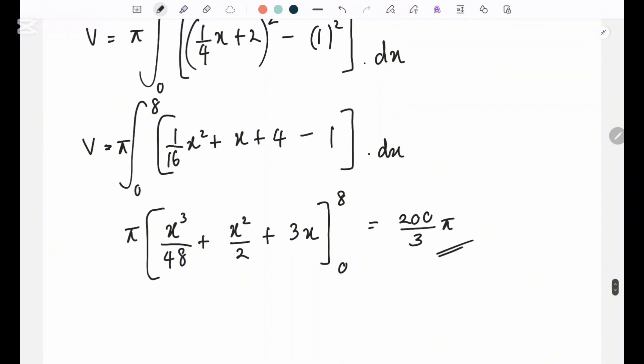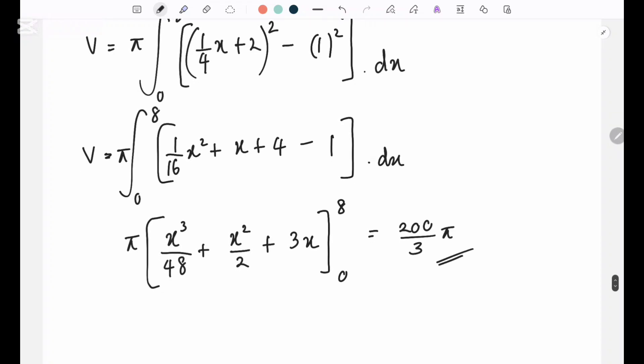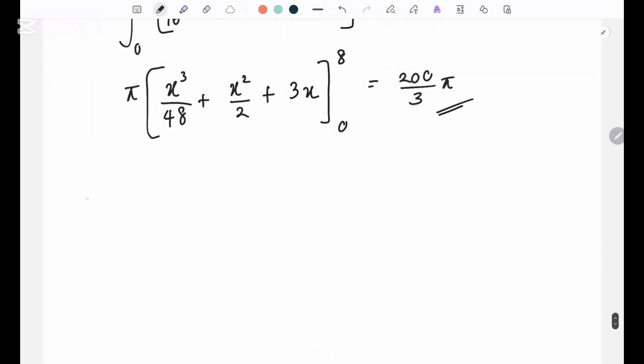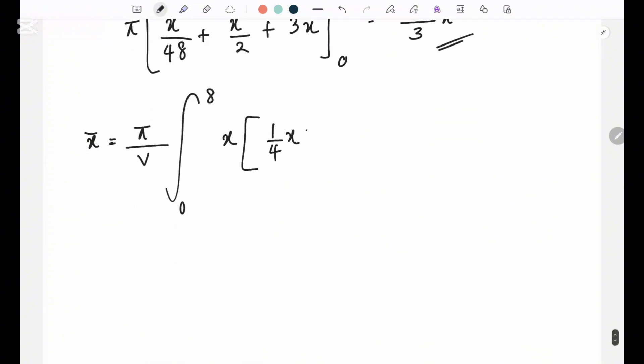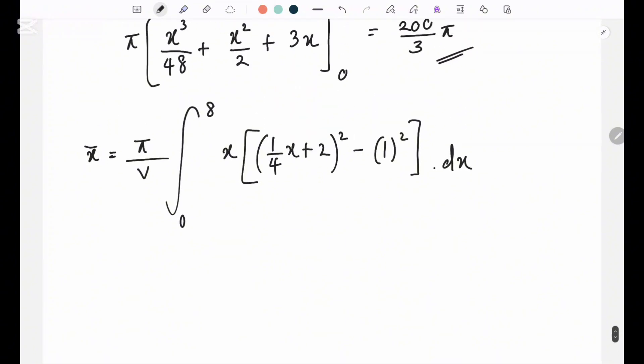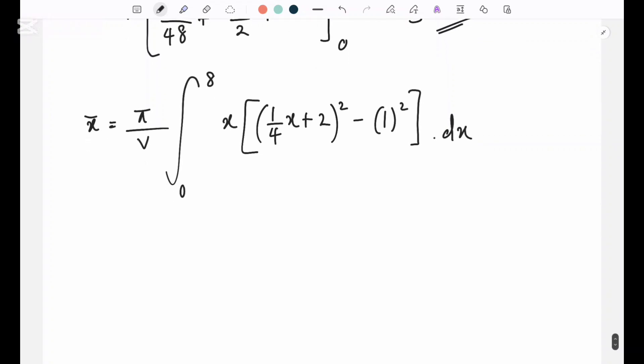That is the volume I get. So now let's go for the center of mass. We found the volume of the object. So now let's go for the center of mass. x dash equals pi over v, integration 0 to 8, x into 1 over 4 x plus 2 squared minus 1 squared. Just remember I'm putting minus 1 squared because we are subtracting that volume of the cylinder. Just remember that, don't forget.